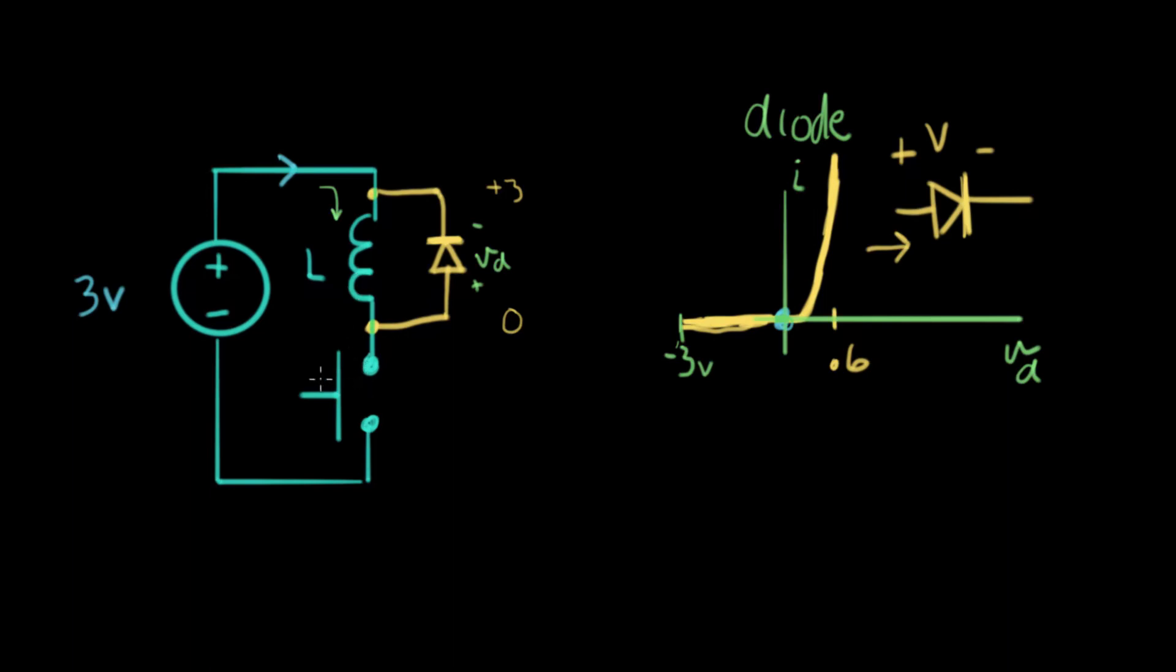Now we open the switch. And as you recall, a minute ago, what happened was this voltage right here, this voltage went big. This went plus big. And we had like 100,000 volts or something. That's where it was headed. Well, we're not going to let it get there. So I'm going to take that away.